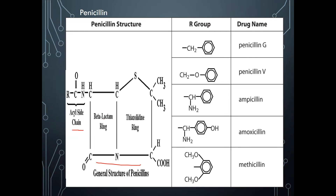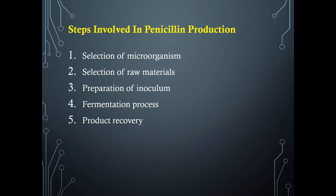If the R group is phenylacetic acid, then we obtain the penicillin derivative penicillin G. The R group is modified to get the desired penicillin derivatives. Some of the R-group-modified penicillin derivatives are penicillin V, penicillin G, ampicillin, amoxicillin, and methicillin. There are five steps involved in penicillin production: selection of microorganism, selection of raw materials, preparation of inoculum, fermentation process, and recovery process.